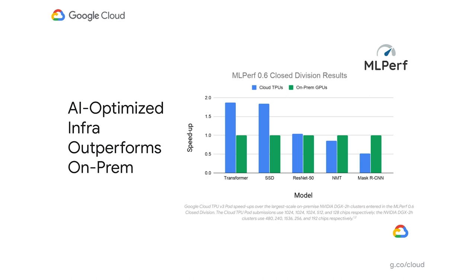AI Platform Notebooks runs in an AI-optimized infrastructure within GCP. Our V3 TPU pods provide 84% faster performance in both object detection and machine translation compared to on-prem infrastructure. This AI-optimized infrastructure is only available on GCP among public clouds and clearly outperforms on-prem systems in MLPerf.